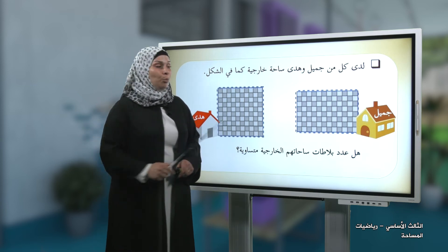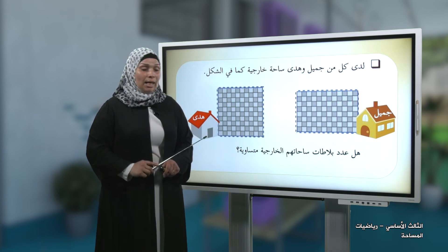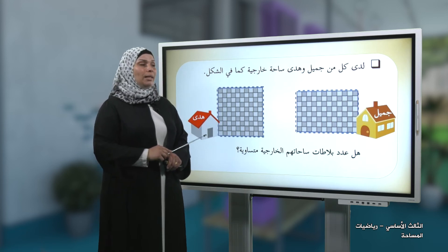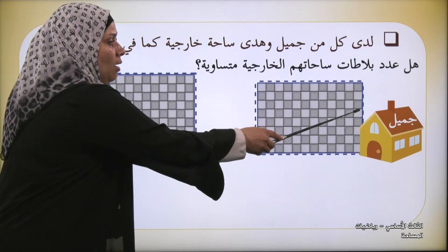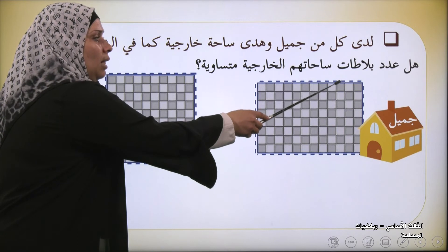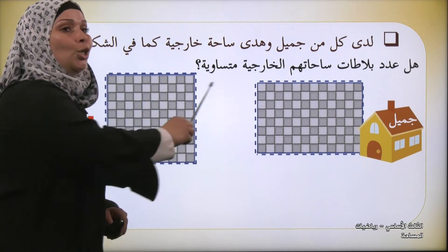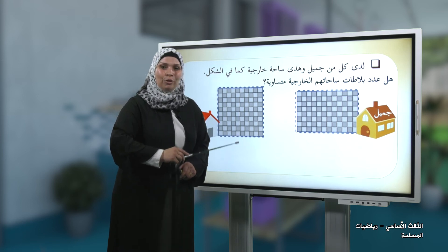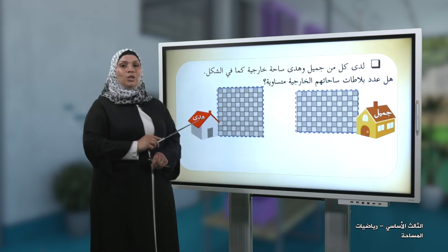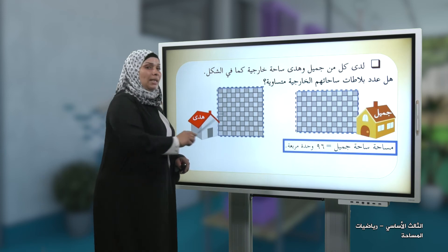هيا بنا نعود لجميل وهدى. عندما بدأنا لقاء اليوم وجدنا أن محيط ساحة جميل يساوي محيط ساحة هدى. الآن نريد أن نجد مساحة ساحة جميل ومساحة ساحة هدى. نقوم بعد البلاطات: 8 في كل صف، ولدينا عشرة صفوف من الثمانيات. إذن مساحة ساحة جميل 96 وحدة مربعة.